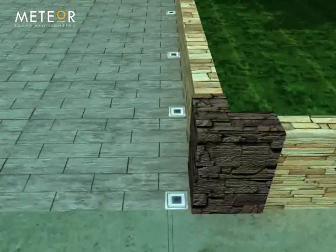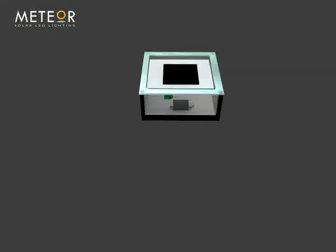During daylight hours, meteor lights take advantage of built-in solar panels to absorb energy.